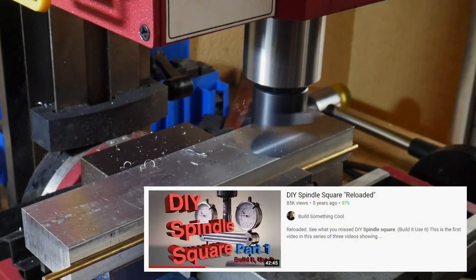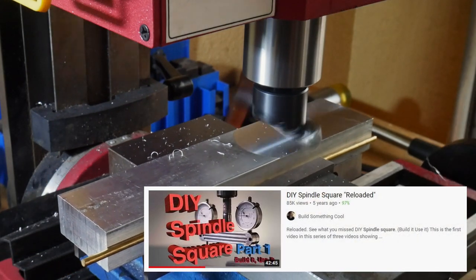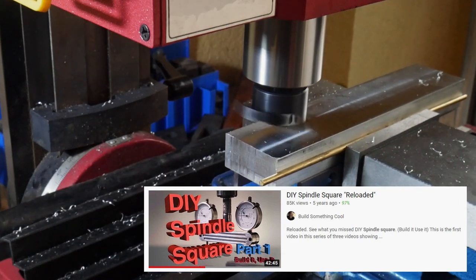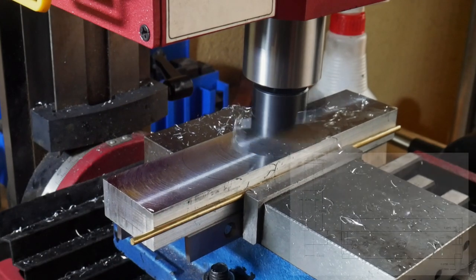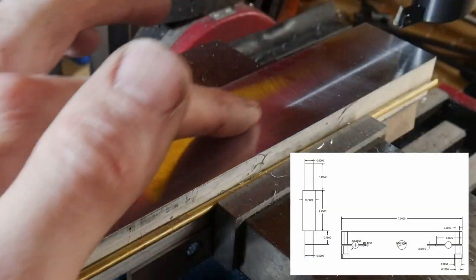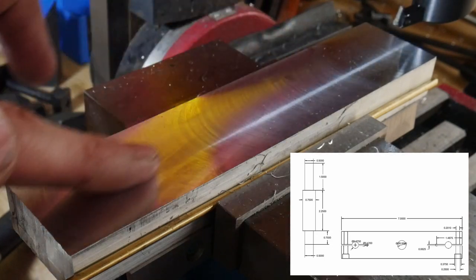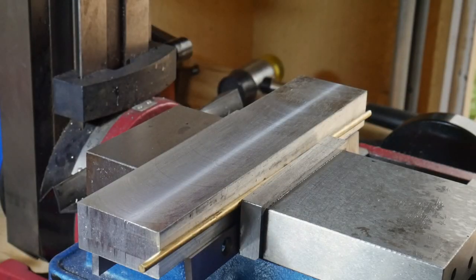I'd like to note here that I got this design from the channel Build Something Cool. He has a three-part series on building a spindle square and I would highly advise you checking out that channel if you will be building one of these spindle squares. I will also be putting a link to the PDF plans for this specific spindle square in the description below.